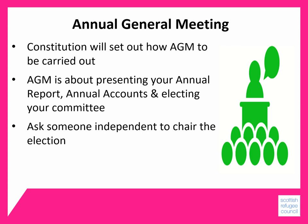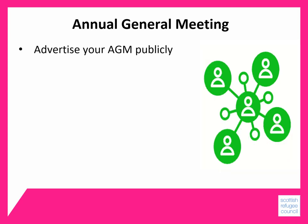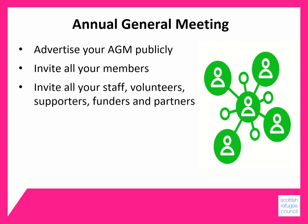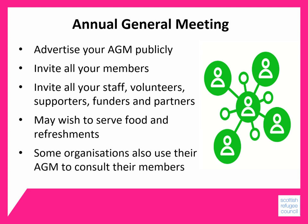Very simply, your AGM is an opportunity to celebrate the achievements of your organisation, to tell your members and partners about everything you're doing, and to give your members a chance to ask questions. Usually you have to advertise your AGM publicly and invite all your members two or three weeks before the meeting takes place — you'll find the exact details in your constitution. You should also invite your staff, volunteers, supporters, funders and partner organisations, but make sure you know who is able to vote. You may wish to serve food and refreshments, and some organisations also use their AGM to consult their members — for example, asking about their needs or asking for help to plan for the coming year.